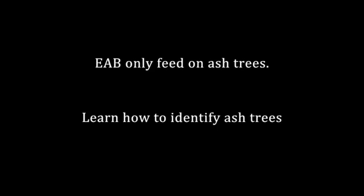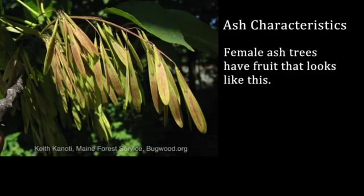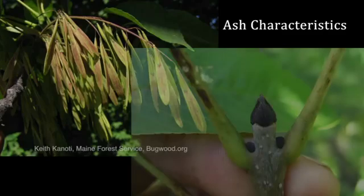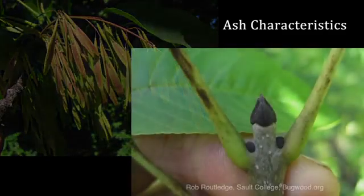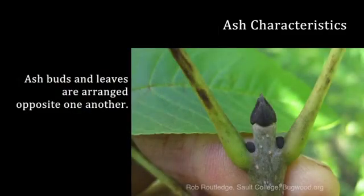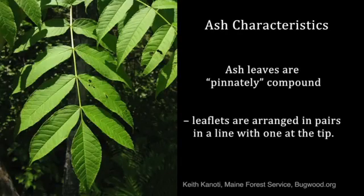Emerald ash borers only feed on ash trees. Learning how to identify ash trees can help in the detection of this pest. Female ash trees have fruit known as samaras; male ash trees will not have them. Leaves and buds are arranged opposite one another, ash leaves are pinnately compound, and leaflets are arranged in pairs along a line.